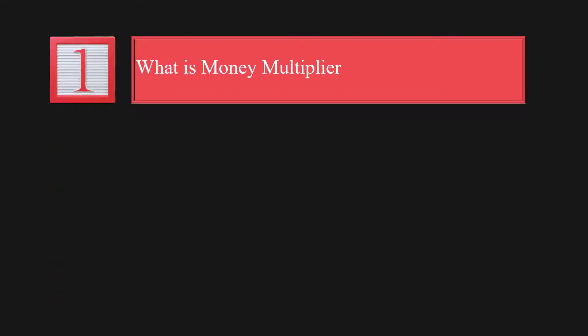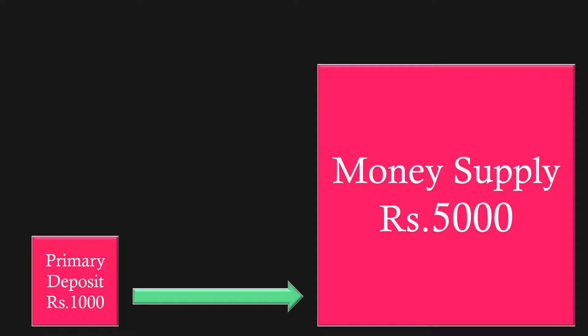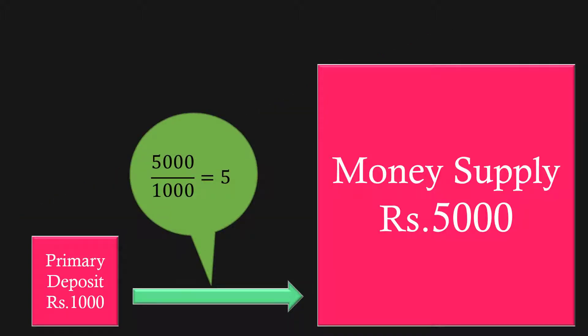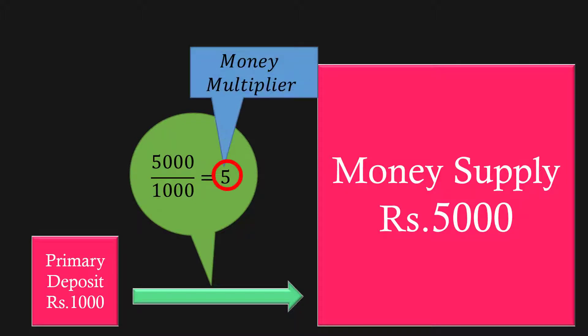What is Money Multiplier? From the lesson Credit Creation by Commercial Banks, we have learnt that an initial deposit of 1000 rupees with the banking system expands the money supply to the tune of 5000 rupees. If you are new to this lesson, kindly view the lesson Credit Creation by Commercial Banks — the link is given in the description. In that example, the money supply is increased by 5000 over 1000, that is 5 times. This 5 is called Money Multiplier.